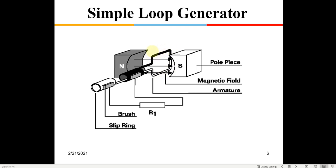The EMF induced in the two horizontal limbs of the coil will always be opposite in direction, but since they're connected in series, they add up to give a net voltage output. If a positive voltage is induced at the near end of the top limb, then a negative voltage is induced at the near end of the bottom limb — these two voltages add up, giving a net output.